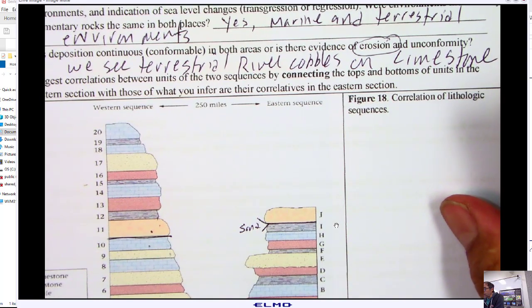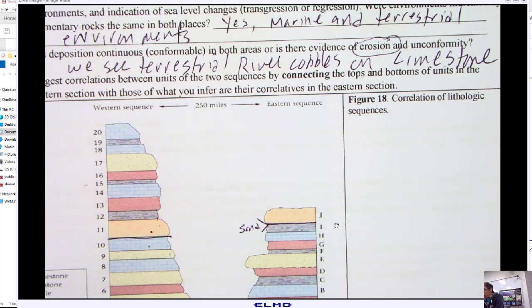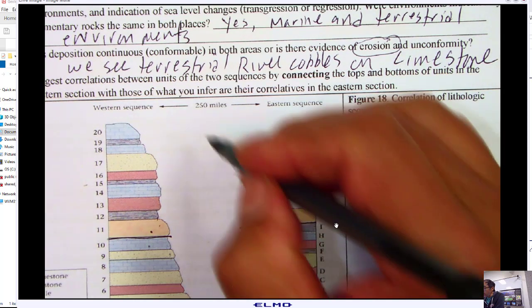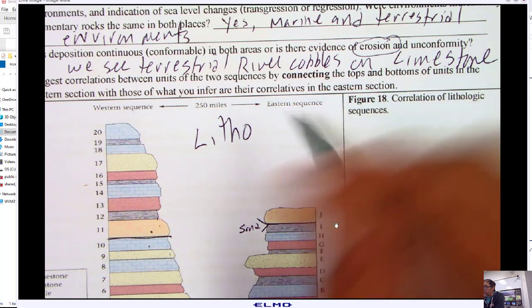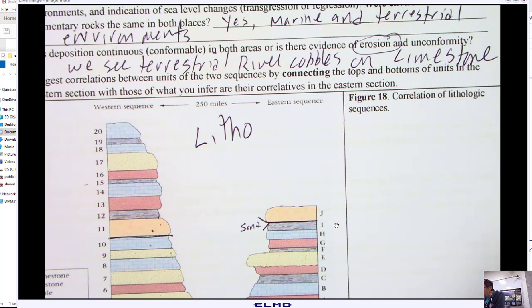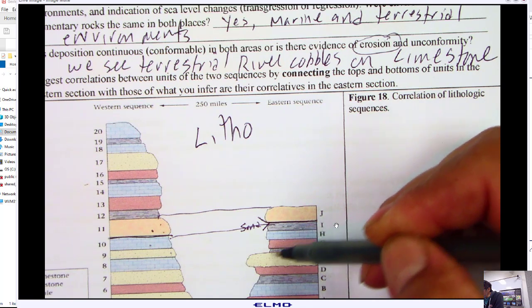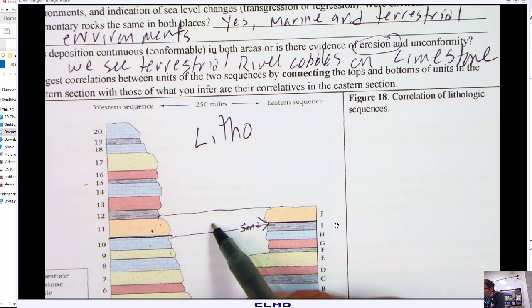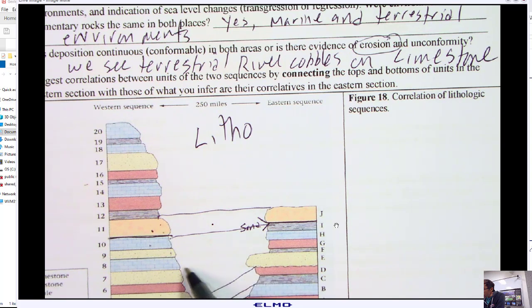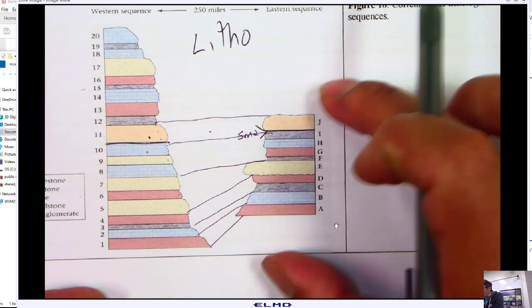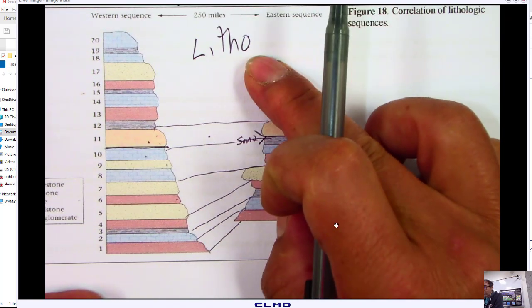We see terrestrial river cobbles, and those river cobbles are the conglomerate on limestone. That's a good piece of evidence. That's telling you right away, that cannot happen normally. You need to have some erosion event to have the conglomerate on top of the limestone. For letter C, suggest correlations between units. If you were just looking at these and wanted to correlate them, we're going to do a lithostratigraphic. Remember, lithostratigraphic is just comparing the rocks. The easy one here is I see conglomerates right here and right here, so that makes sense. I can correlate those two.